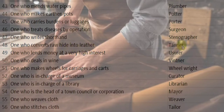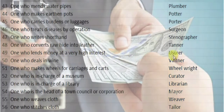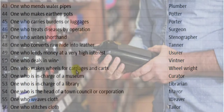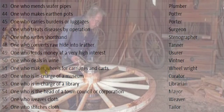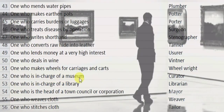One who converts rawhide into leather is a tanner. One who lends money at a very high interest is a usurer. One who deals in wine is a vintner. One who makes wheels for carriages and carts is a wheelwright. One who is in charge of a museum is a curator.